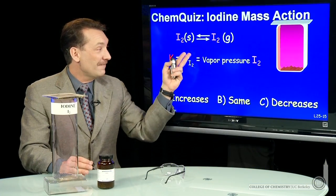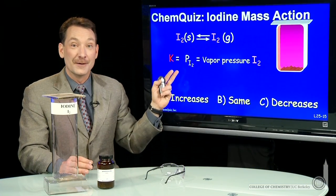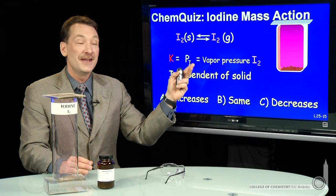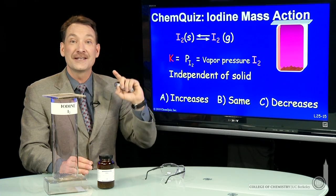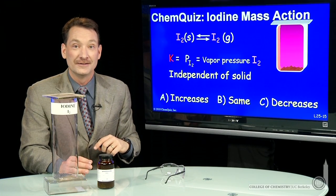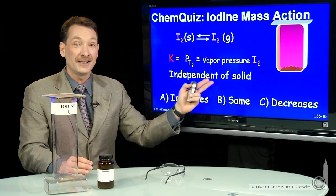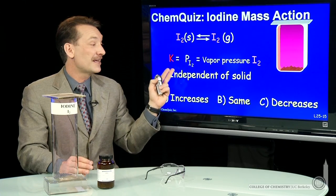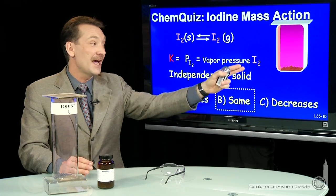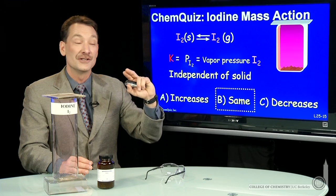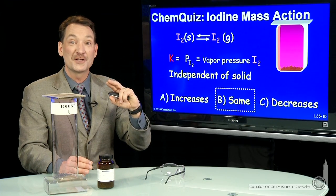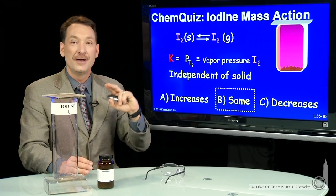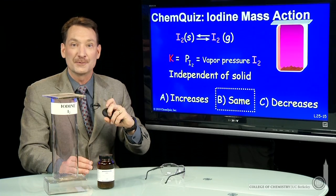So if I have no solid appearing in the vapor expression, then this equilibrium constant is independent of the solid. If it's independent of the solid, then as I add solid, I shouldn't expect this equilibrium to change. Doesn't appear in the equilibrium expression, the solid, so the solid doesn't affect the equilibrium expression.